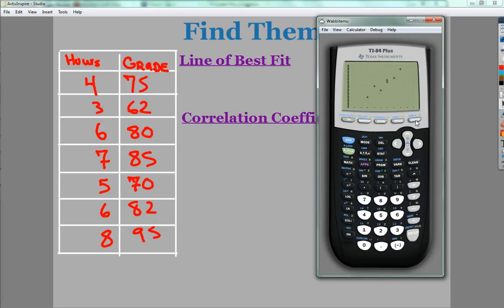Now, line of best fit, correlation coefficient. I need to go into the stat menu again, and I'm going to look at the calc section, and I'm going to go down to linear regression.